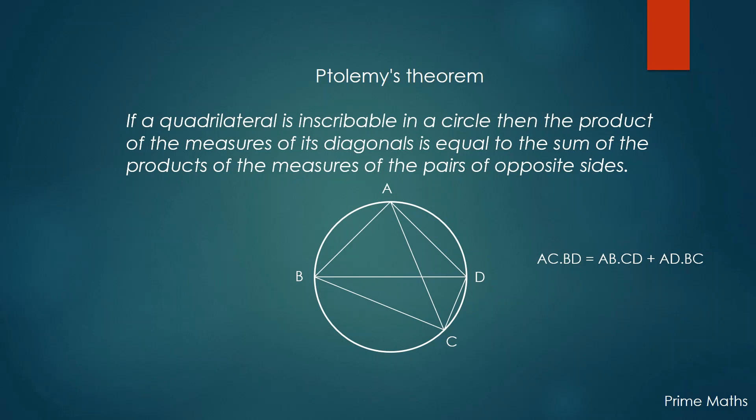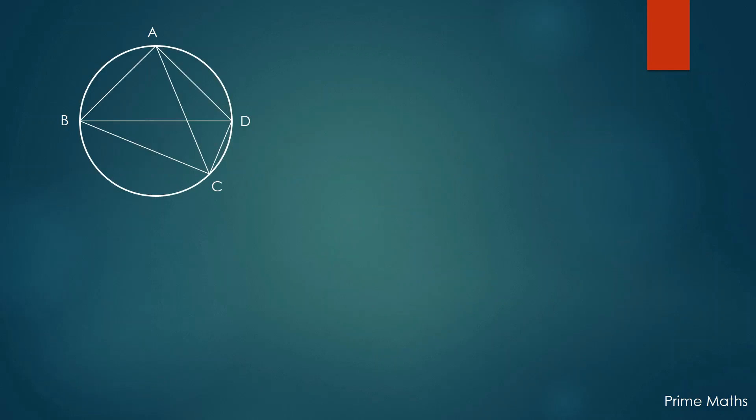Without further delay, let's start proving. At first, we draw a line segment AE such that angle BAE is equal to angle CAD. Since we have to find the relationship between the sides of the quadrilateral and its diagonals, similarity seems to be the obvious choice here, as we know two similar triangles have their corresponding sides proportional.